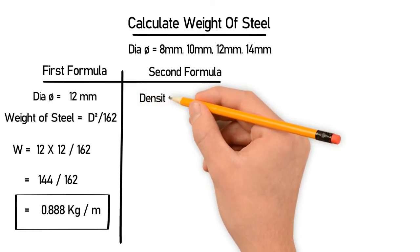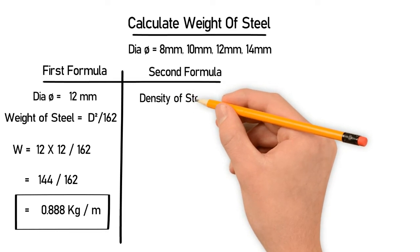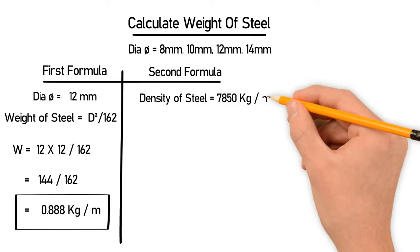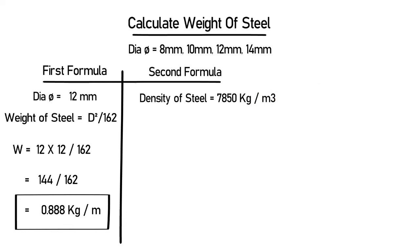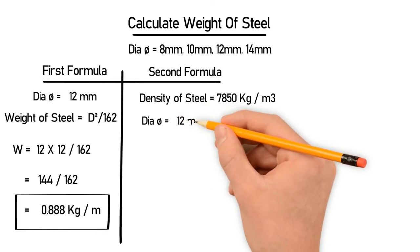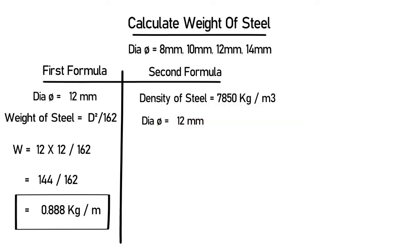Now let's come to the second formula. As we all know, the standard density of steel is equal to 7850 kilogram per meter cube. Again, let's take the same diameter which is 12 millimeter. We have to convert the diameter into meters.